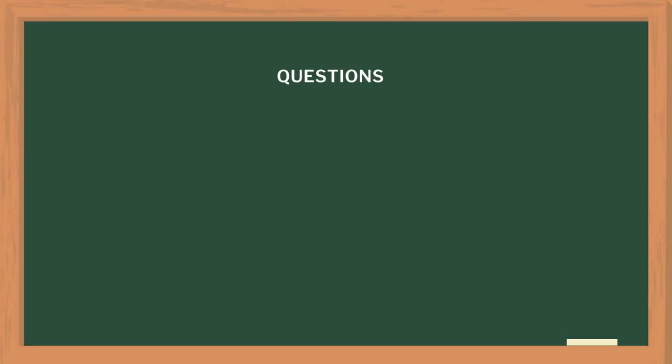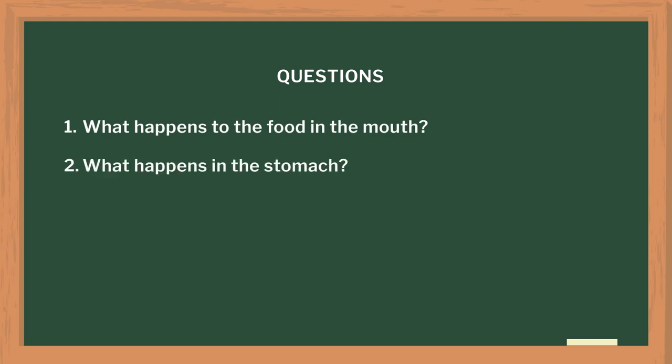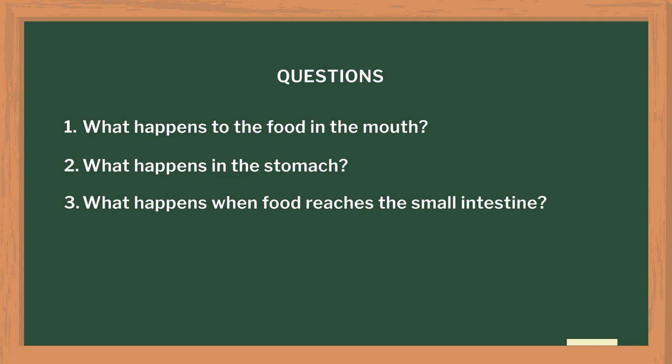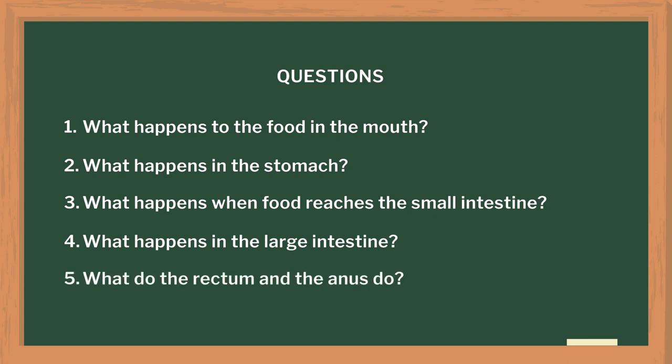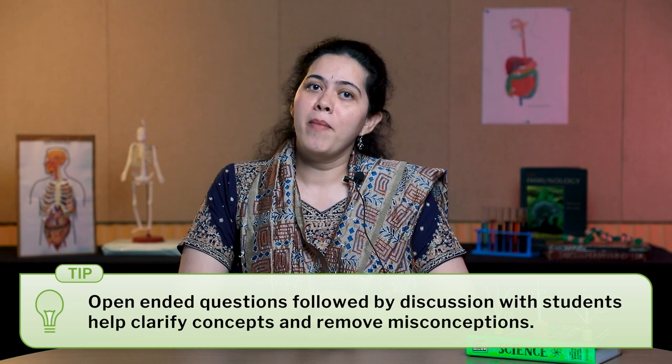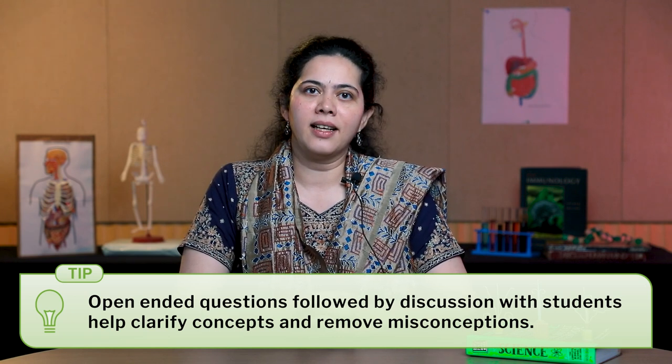As you carry out this activity, ask the students questions to clarify what is happening in each part of the digestive system and assess their understanding of the process of digestion. You can ask questions such as: what is happening to the food in the mouth? What happens in the stomach? What happens when the food reaches the small intestine? What happens in the large intestine? What do the rectum and the anus do? When you ask such open-ended questions, make sure that you discuss the answers and clarify their doubts then and there. Students also sometimes come up with questions related to disorders of the digestive system, especially stomachache and diarrhea, because these are common reasons why they sometimes skip school, and they get really curious about these phenomena. We really feel that this raising of curiosity and questions in students' minds is the biggest plus point of activity-based teaching and learning.